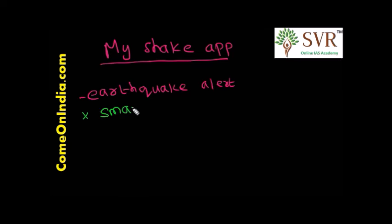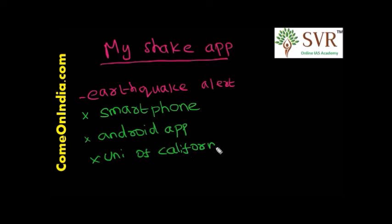For that purpose, University of California researchers have developed an app called MyShake App. It is an android app launched by scientists at the University of California. The app can sense an incoming earthquake and warn users 40 seconds in advance.